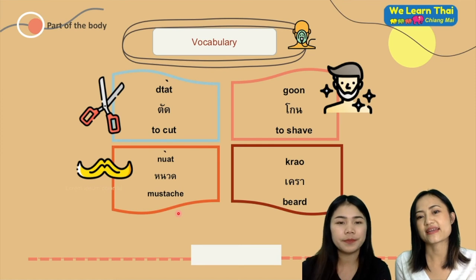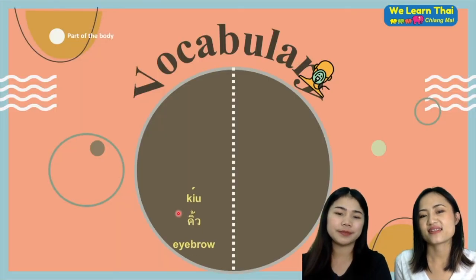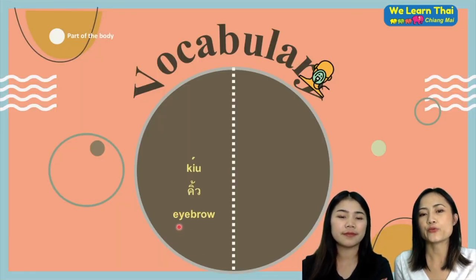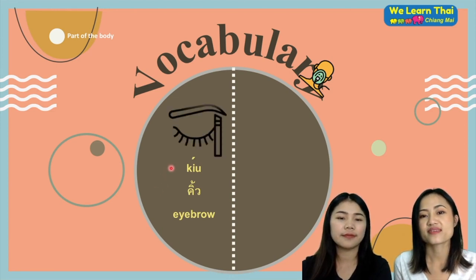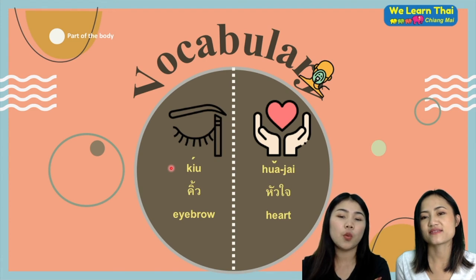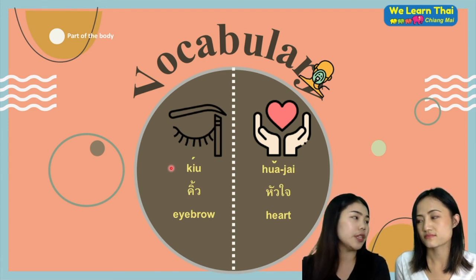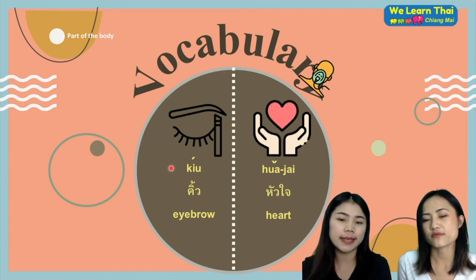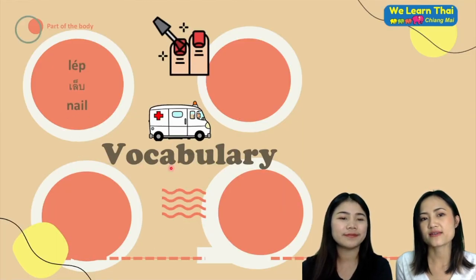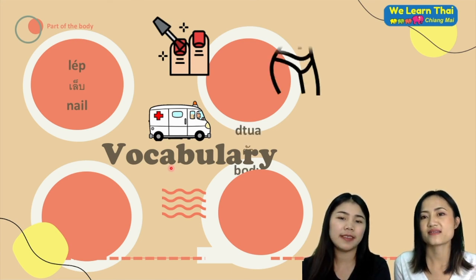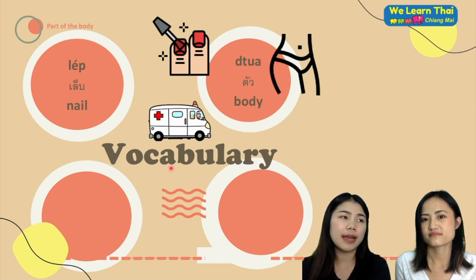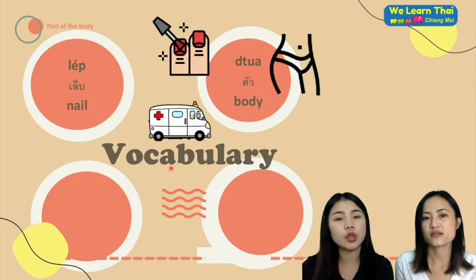Next is คิ้ว, meaning eyebrow. Then หัวใจ, meaning heart — the physical heart. Then ลิ้น meaning nails. And ตัว, which means body — your whole body.